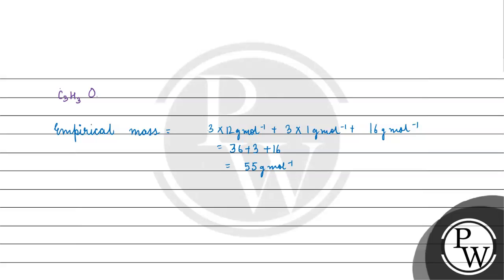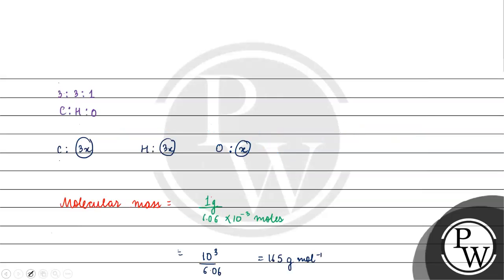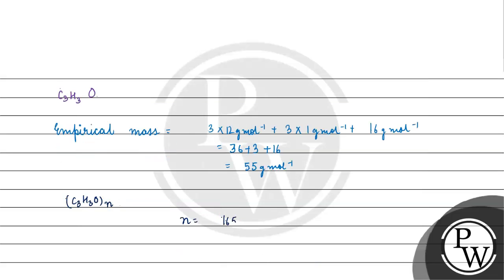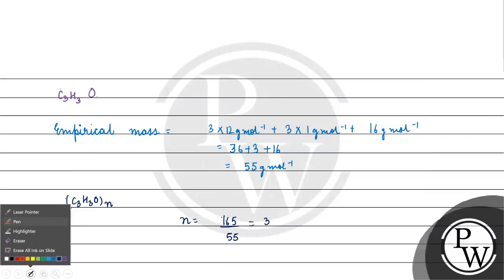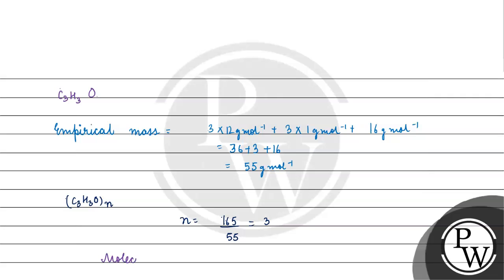The empirical formula is C₃H₃O. To write the molecular formula, we use (C₃H₃O)ₙ. The value of n = molecular mass / empirical mass = 165 / 55 = 3. So the molecular formula for the compound will be (C₃H₃O)₃, which is C₉H₉O₃.